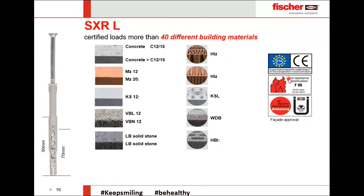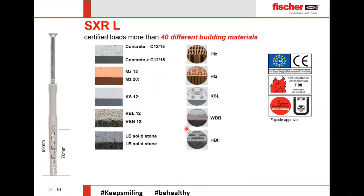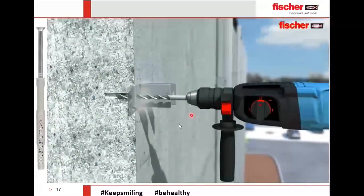The XXR L is available at two anchorage depths: 70 mm and 90 mm. It is also approved for 40 different building materials — with ETA approval Option 1 for masonry and concrete, fire approval, and facade approval. The XXR is truly a problem-solver across all types of masonry blocks.